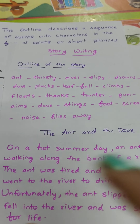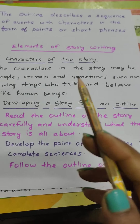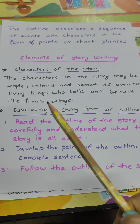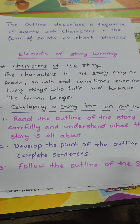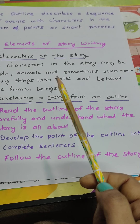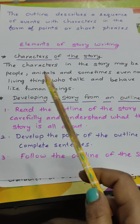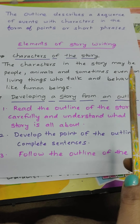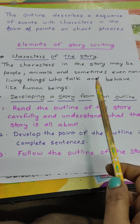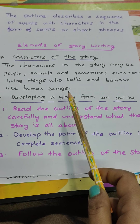We have to visualize and imagine what is happening in the story. Now, elements of story writing. First of all, the characters of the story. As we have seen in the outline, the characters in the story may be people, animals, and sometimes even non-living things who talk and behave like human beings.